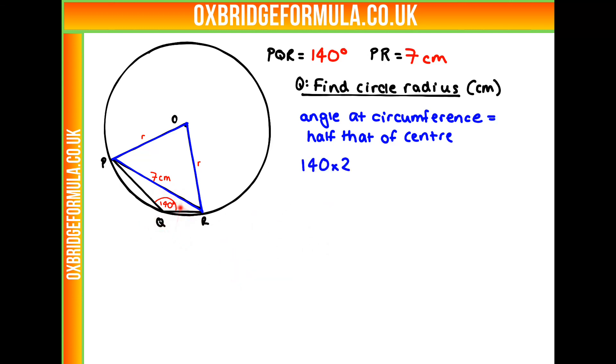We can use the theorem that the angle at the circumference is half of the angle at the center. So if we times our angle here by 2, we get 280 degrees. And that corresponds to our angle at the center here.